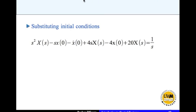Now we substitute initial conditions. We know that x of 0 is 1, x dot of 0 is 0. That reduces this equation to this.